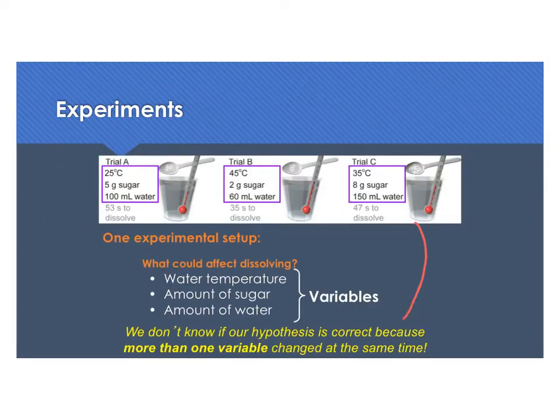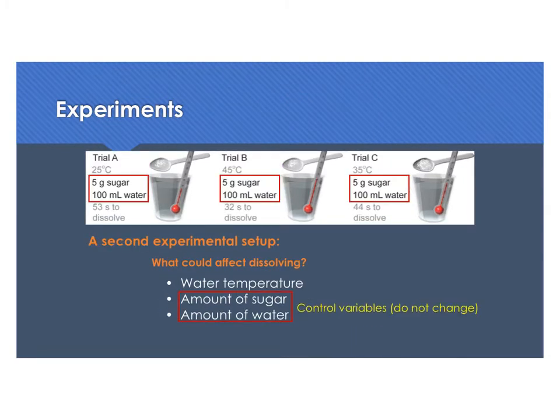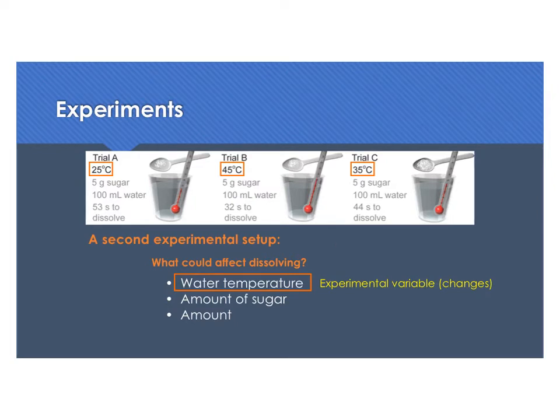We don't know if our hypothesis is correct from that original experiment because more than one variable changed at the same time. In a good experiment, we want to only change one thing at a time. In this particular experiment, we want to know if the temperature of the water affects the speed of dissolving. That's the one thing I'm going to change. The other things I want to keep the same: the amount of sugar and the amount of water. So in this new experiment, we now have five grams of sugar in each cup, 100 milliliters of water in each cup, and then we can change the temperature. Those things that we keep the same, the variables that we make sure we do not change, are called the control variables. The other experimental variable that we have is the water temperature, the thing that changes. We refer to it as the experimental variable, or sometimes it's called the independent variable.